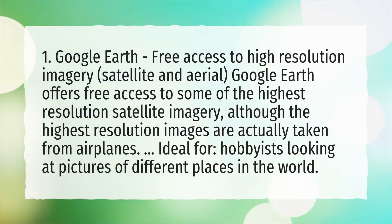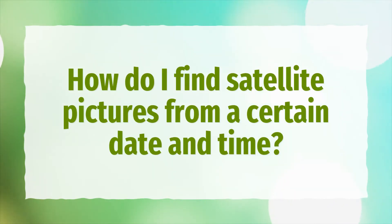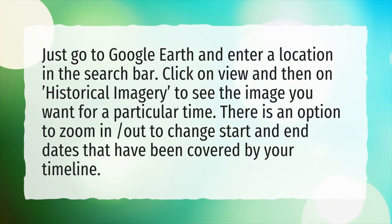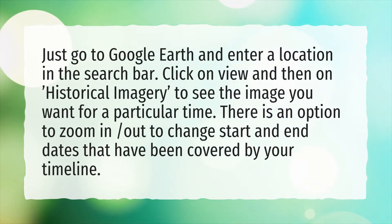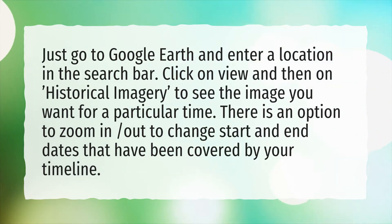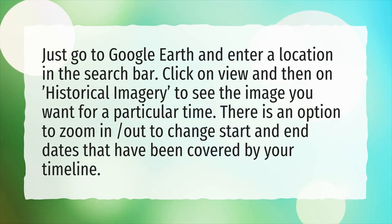How do I find satellite pictures from a certain date and time? Just go to Google Earth and enter a location in the search bar. Click on View and then on Historical Imagery to see the image you want for a particular time. There is an option to zoom in or out and to change the start and end dates covered by your timeline.